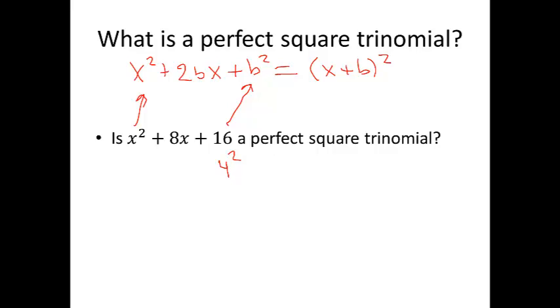If I rewrite it as 4 squared, my b value becomes 4. So I already have x squared, I already have my last term, which is a perfect square, written as 4 squared. So the question then is, can I write this middle term as 2 times 4 times x? And obviously, 2 times 4 times x is 8x, so this checks.